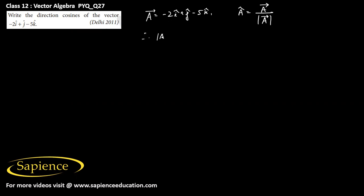So now therefore, the magnitude of A vector, that is equal to square root of (-2) whole square plus 1 square plus (-5) whole square. So this will be equal to 4 plus 1 plus 25, so this is 26 plus 4, that is root over 30.